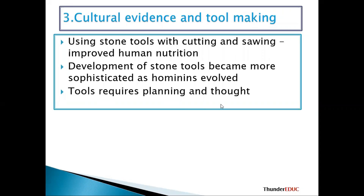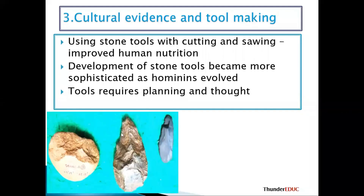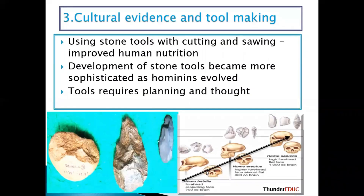Tool making required planning and thought, so it means that also the brain was developing. You don't just come from nowhere and develop a tool. A generation which will come will laugh at us, at the kind of phones and computers we are using — technology, development, and the brain keep on evolving. The kind of tools they started with, they modified them up to this level, which shows that there is development in thinking and an increase in brain size.